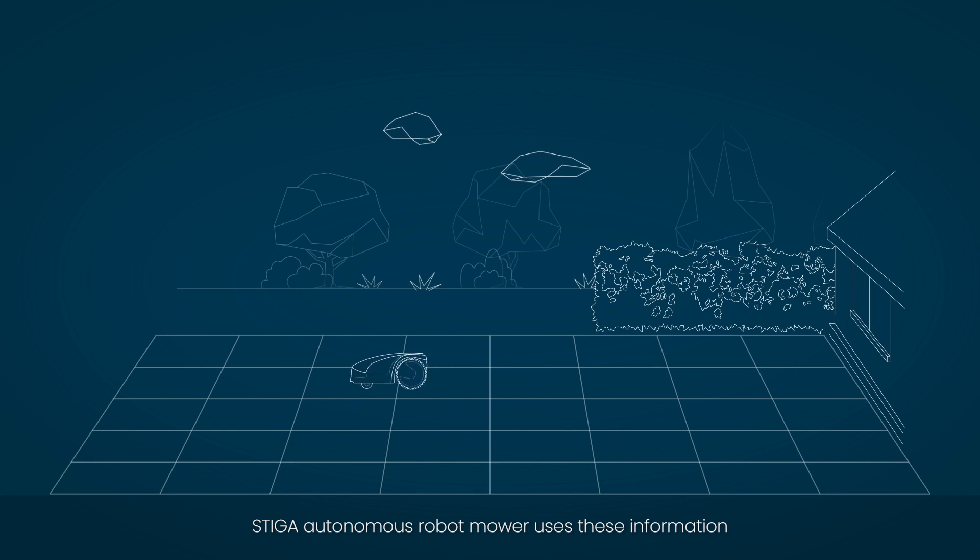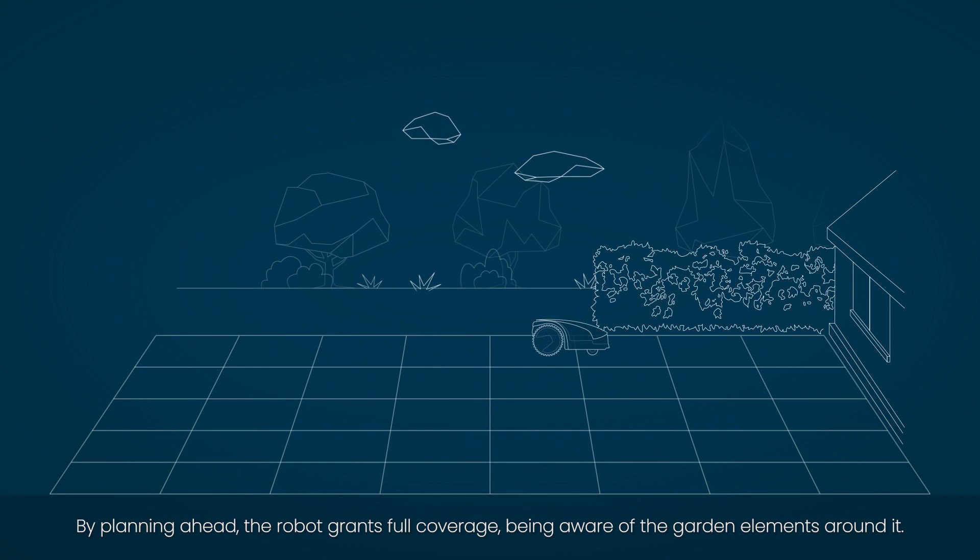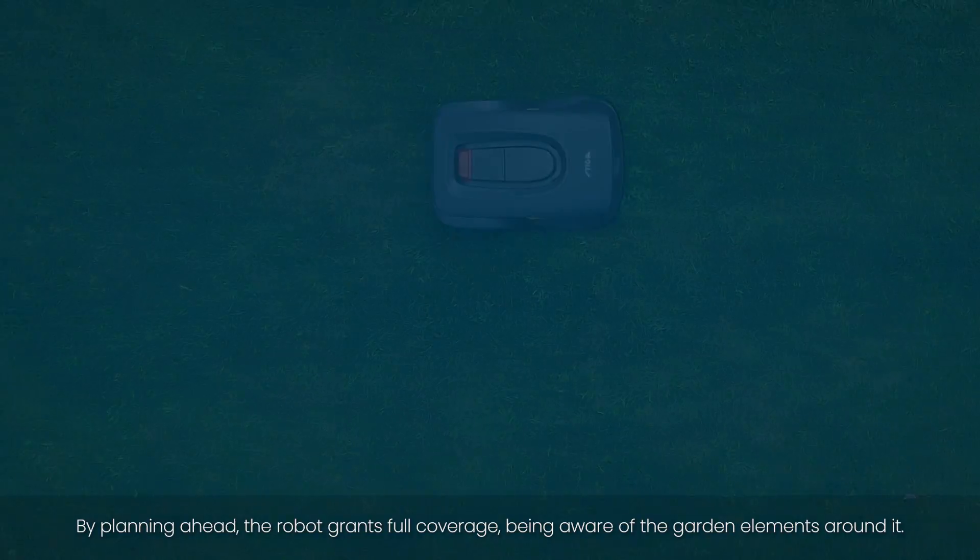Steger Autonomous Robot Mower uses this information to plan mowing areas when signal is strong enough. By planning ahead, the robot grants full coverage, being aware of the garden elements around it.